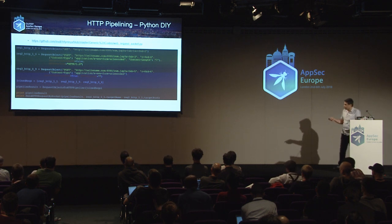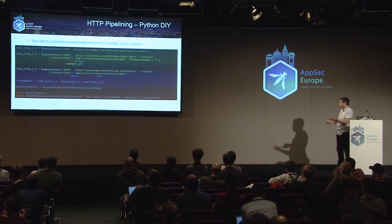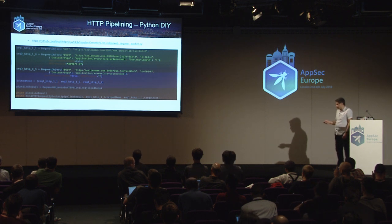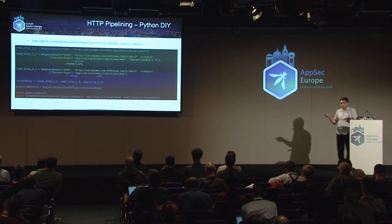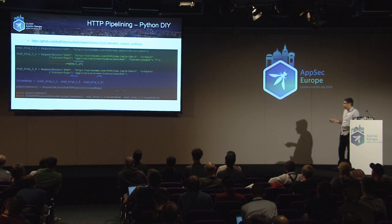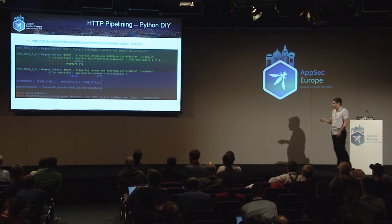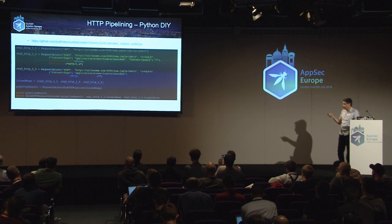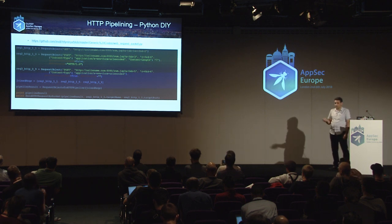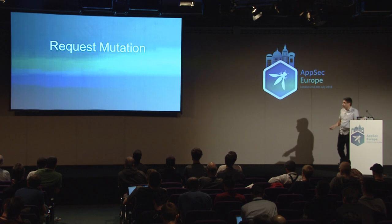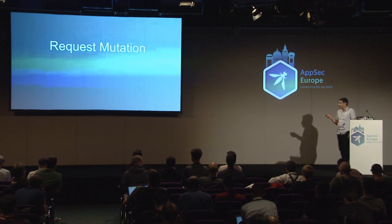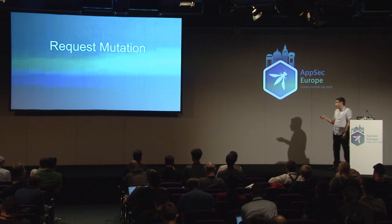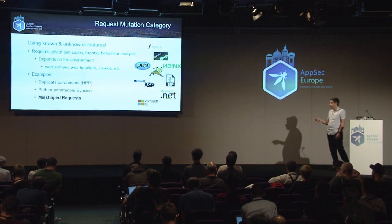I have also created a Python module or function that you can use to send requests via HTTP pipelining without Burp Suite. It handles the pipelining, fixes headers, and manages content lengths automatically. That was about payload delivery. Now I'm going to talk about request mutation, which is the part I like more because I can do more with it.